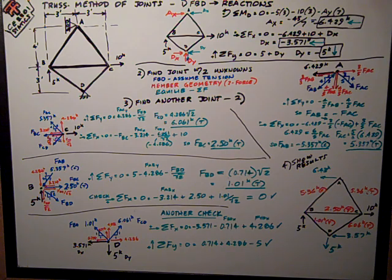The 5 kips applied up here has no place to go but down here to the support at D, negative 5. And so that's a good thing about showing your results. You can kind of look at the big picture and see if it all makes sense.